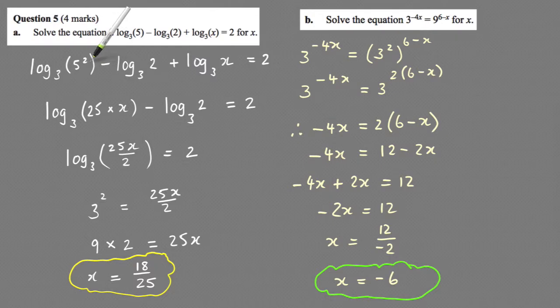This is all just using your log laws. The first thing that I've done here is to put this 2 inside here and it becomes log to the base 3 of 5 squared, and then minus the rest of it. So minus log 3 of 2 plus log 3 of x equals 2.